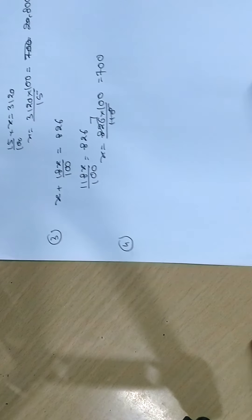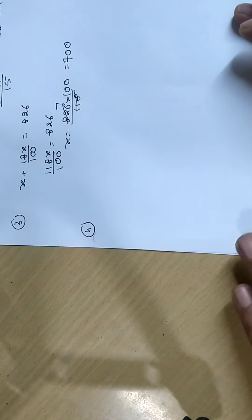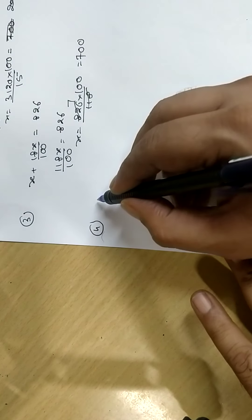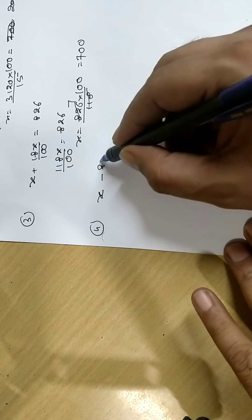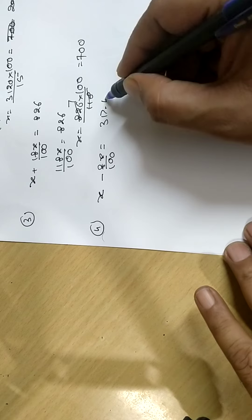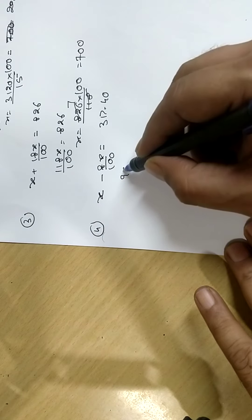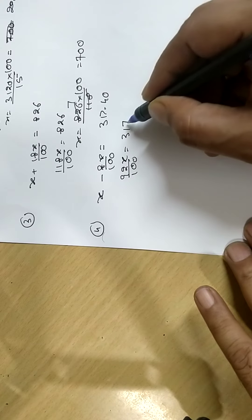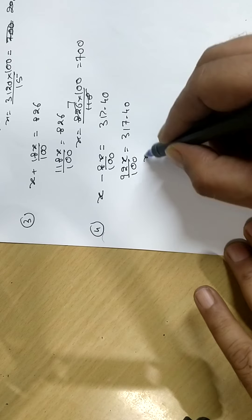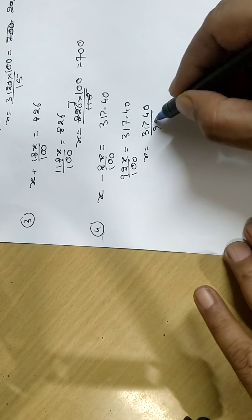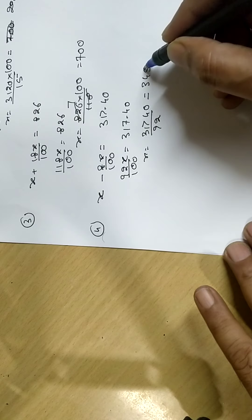Fourth. On decreasing the price of TV set by 8%, let the original price is X, decreased by 8%, that equals 317.40. Take LCM. 92X upon 100 equals 317.40. X equals 31,740 upon 92. Do cancellation, is 345.